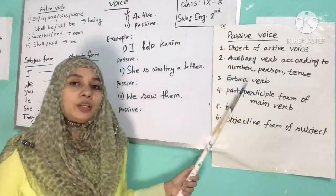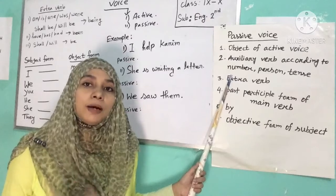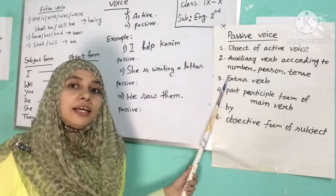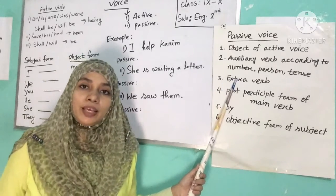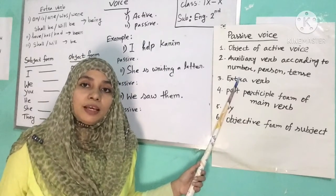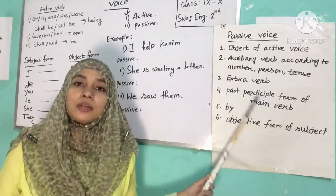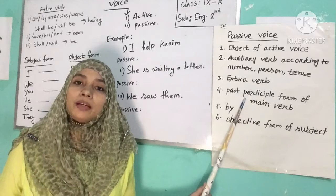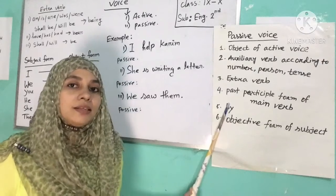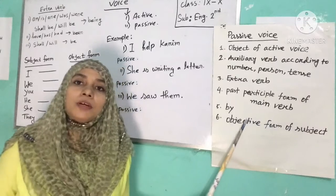Number three: extra verb — we use extra verb only when we find an auxiliary verb in the active voice. Number four: past participle form of the main verb. Number five: the word 'by'. And number six: objective form of the subject.